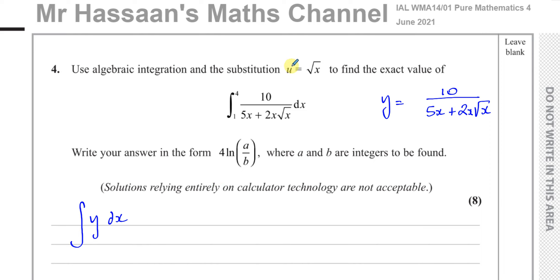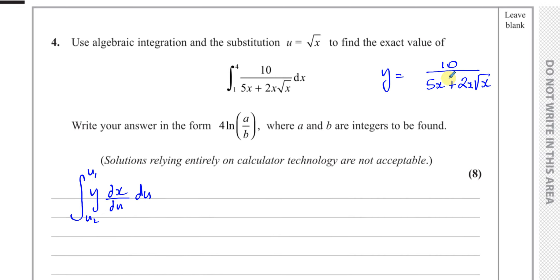Now we've got to use the substitution with u. So we write dx as dx/du times du. That's equivalent to the integral of y with respect to x. And here we have to have the limits in terms of u. So if we take our y, we have y equals 10 over 5x plus 2x root x. And we know that u is equal to root x. That means that u squared is equal to x.